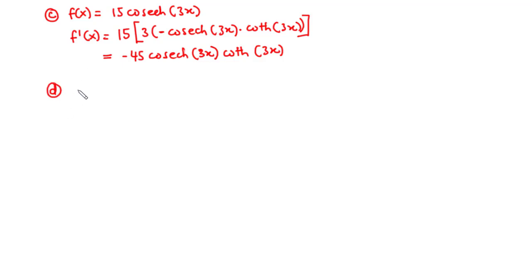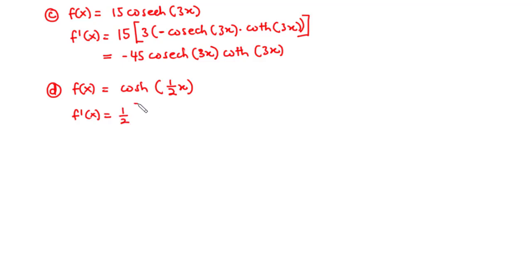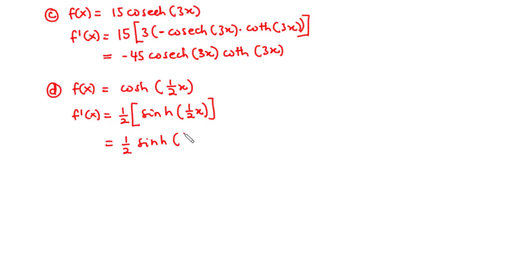Now to D. We have f(x) = cosh(x/2). Therefore, f prime of x: the derivative of x/2 with respect to x is 1/2. The derivative of cosh gives sinh. So we have 1/2 times sinh(x/2), which equals (1/2)sinh(x/2). Now let's move on to the derivatives of inverse hyperbolic functions.